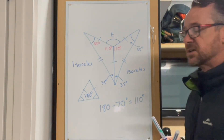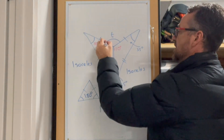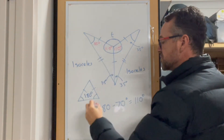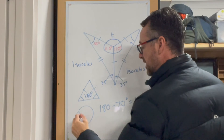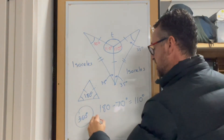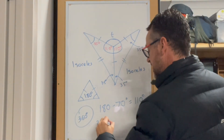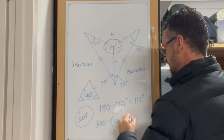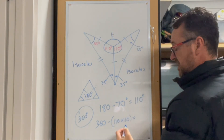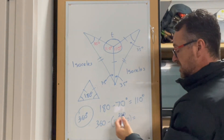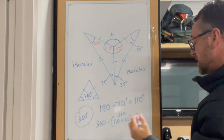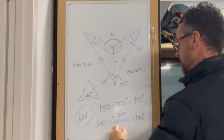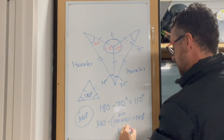Now we can consider that this is a full revolution, and we know a full circle adds up to 360 degrees. So 360 take away (110 plus 110) — that's 360 take away 220 — leaves us with 140 degrees. Therefore T equals 140 degrees.